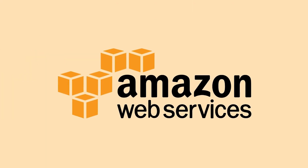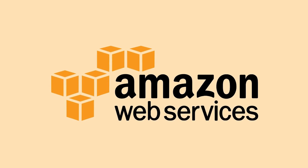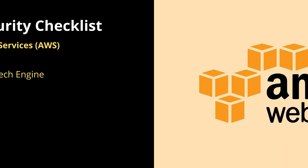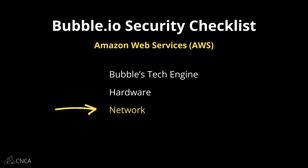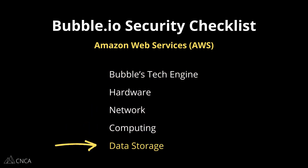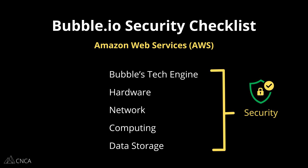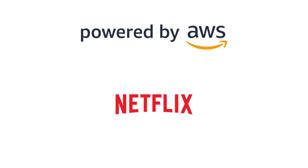Bubble is compliant with the SOC 2 Type 2 Standard for Security — a set of standards and guidelines for service organizations to maintain overall security, confidentiality, and integrity of customer data. Bubble is also GDPR compliant, which is a privacy regulation in the EU and the UK around how personal data is processed. Bubble apps are built on Amazon Web Services, or AWS, which is essentially Bubble's underlying tech engine, responsible for hardware, network, computing, data storage, and security — the same infrastructure powering Netflix, Airbnb, and LinkedIn.